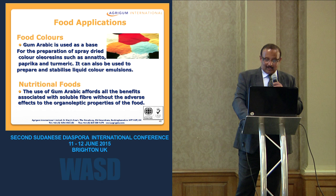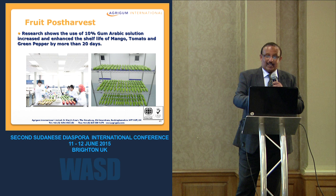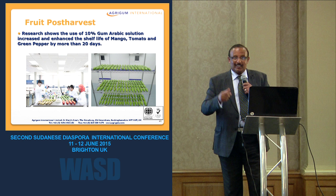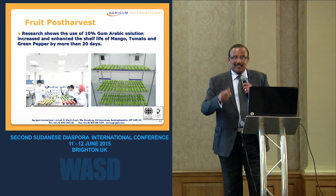Gum Arabic is also used in food colors. As a fruit post-harvest coating, research — including a publication by a Malaysian group — shows that applying about 10% gum Arabic increases the shelf life of mango and tomatoes.